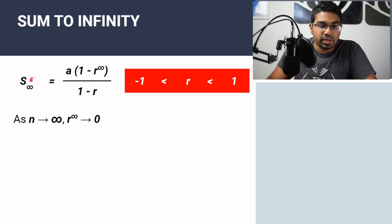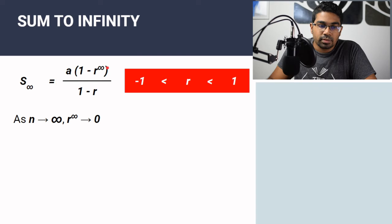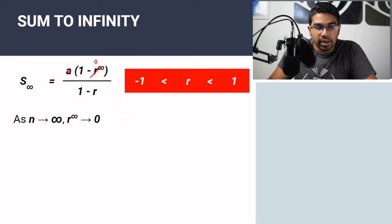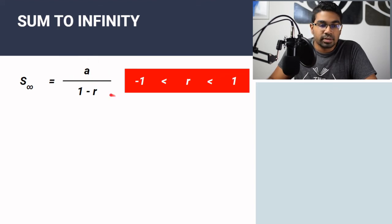When n is infinity, the term R^n approaches 0, so we can remove it from the formula. What remains in the numerator is A times 1, since A times 0 is 0. Therefore, the sum to infinity formula is: S∞ = A / (1 − R).